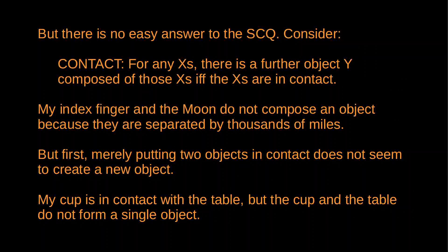One initial thought is that ordinary objects exhibit a kind of unity — their parts are contiguous in space. So we might suggest that the answer to the special composition question is provided by the principle of contact: for any Xs, there is a further material object Y composed of those Xs if and only if those Xs are in contact. This is why there is not an object composed of my left index finger and the moon — they are separated by hundreds of thousands of miles. Unfortunately, merely putting two objects in contact doesn't seem to create a further object. My cup is currently on the table in front of me, it is in contact with the table, but the cup and the table do not form a single object.